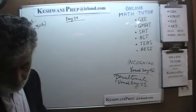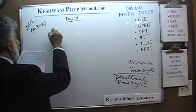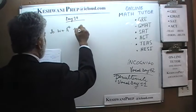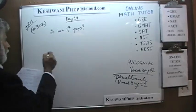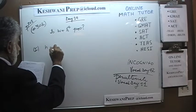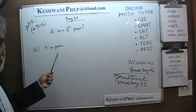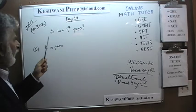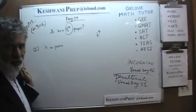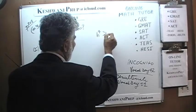Number one in the second column: is w plus h to the fourth positive? That's all it is. Let's see what the first statement tells us. It says h is positive. As you can see, telling us that h is positive is worthless information.